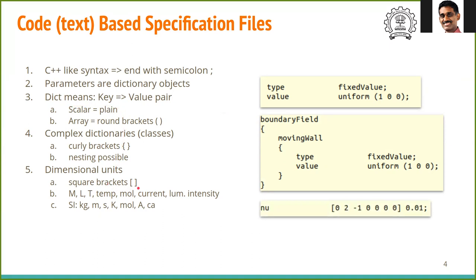Dimensional units are denoted by square brackets. Nu, which is the kinematic viscosity, has a dimension of this array and a value of 0.01. This array stands for mass, length, time, temperature, quantity which is usually mole, current, and luminous intensity. In SI units, this will be kilograms, meters, second, kelvin, mole, ampere, and candela. For nu, which has units of meters square per second, this is m0, l power minus 2, t power minus 1, and rest all is 0.